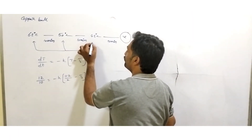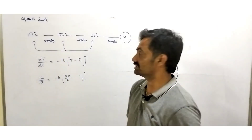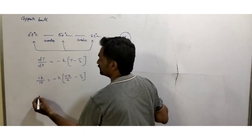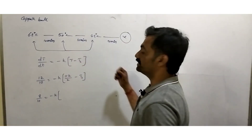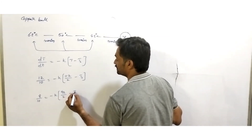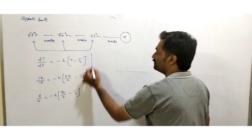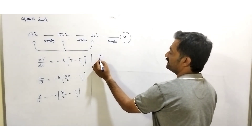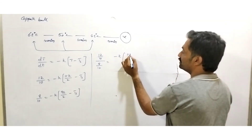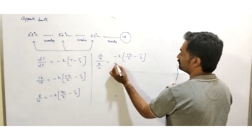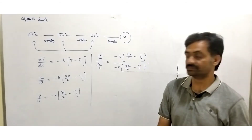For the second interval, temperature decreases from 50 to 42°C in 10 minutes: (50 − 42)/10 = −K × [(50 + 42)/2 − T_s], giving 8/10 = −K × (46 − T_s). Dividing the first equation by the second: (12/10)/(8/10) = [−K(56 − T_s)] / [−K(46 − T_s)]. The 10s and K cancel, leaving 3/2 = (56 − T_s)/(46 − T_s).